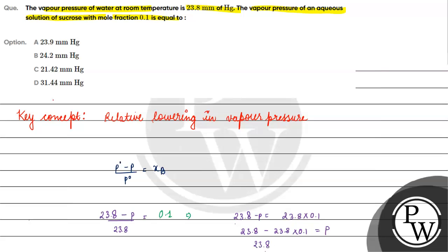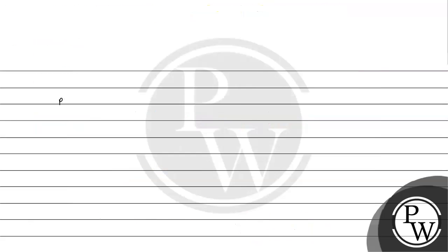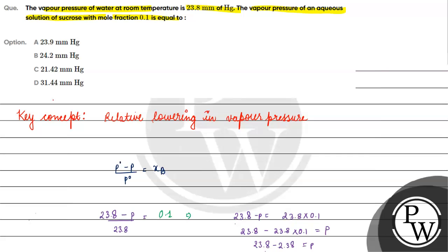We get 23.8 minus 2.38 equals p, which is 21.42 mm Hg. So option C will be the correct answer for this question. I hope you understood it well. Thank you and all the best.